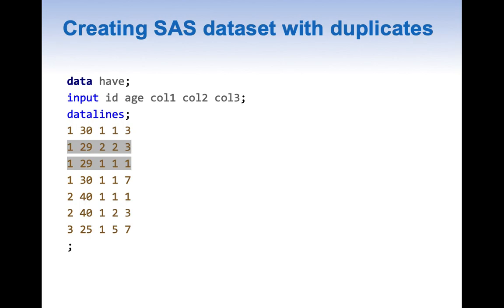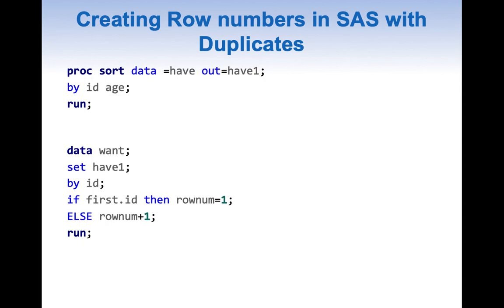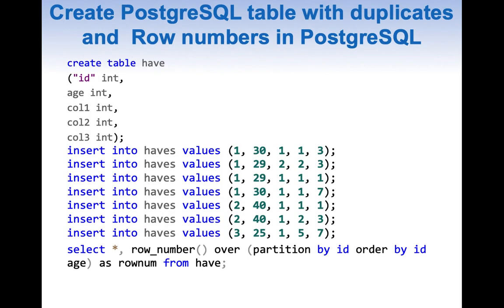Let us get into something more interesting by adding duplicates in the sorting columns. Here we are creating a SAS dataset with duplicates. In this dataset we have two rows which are duplicated at ID and age level which are highlighted here. We do our procsort and do exactly the same thing. In similar fashion we are going to do in the postgres table inserting the data with duplicates. And again our select star with the row number to give the row numbers.